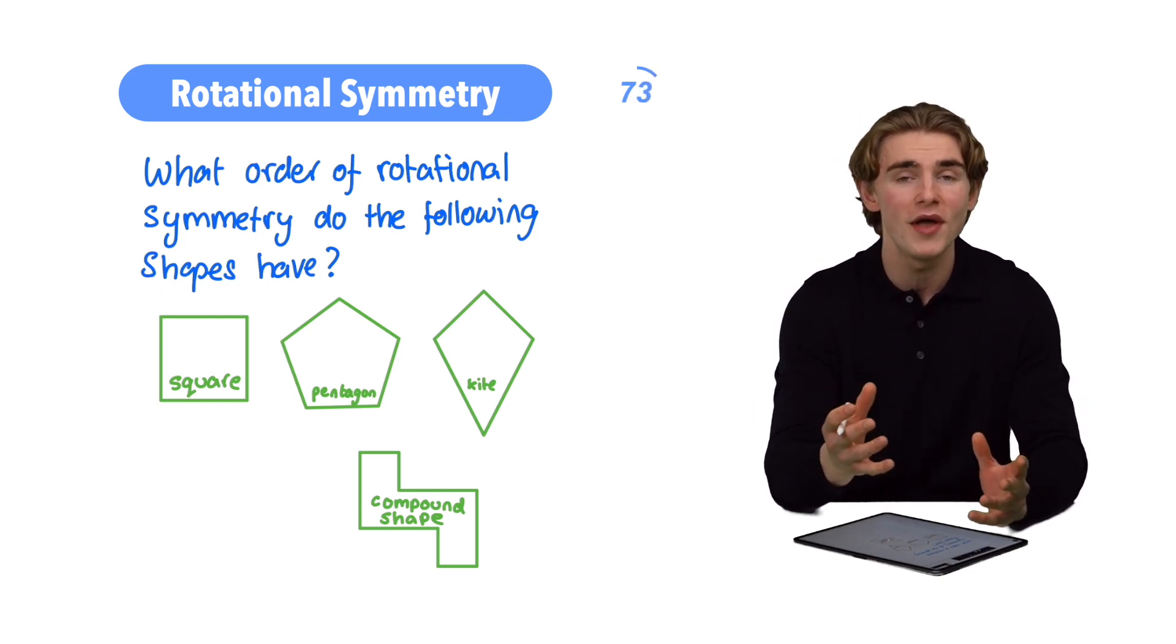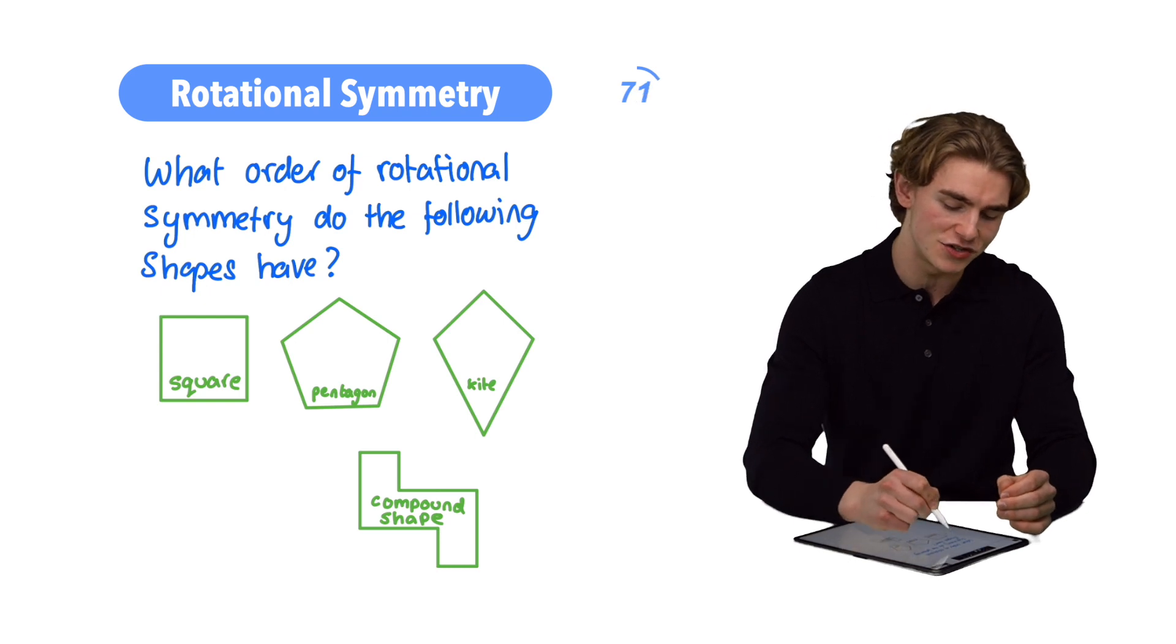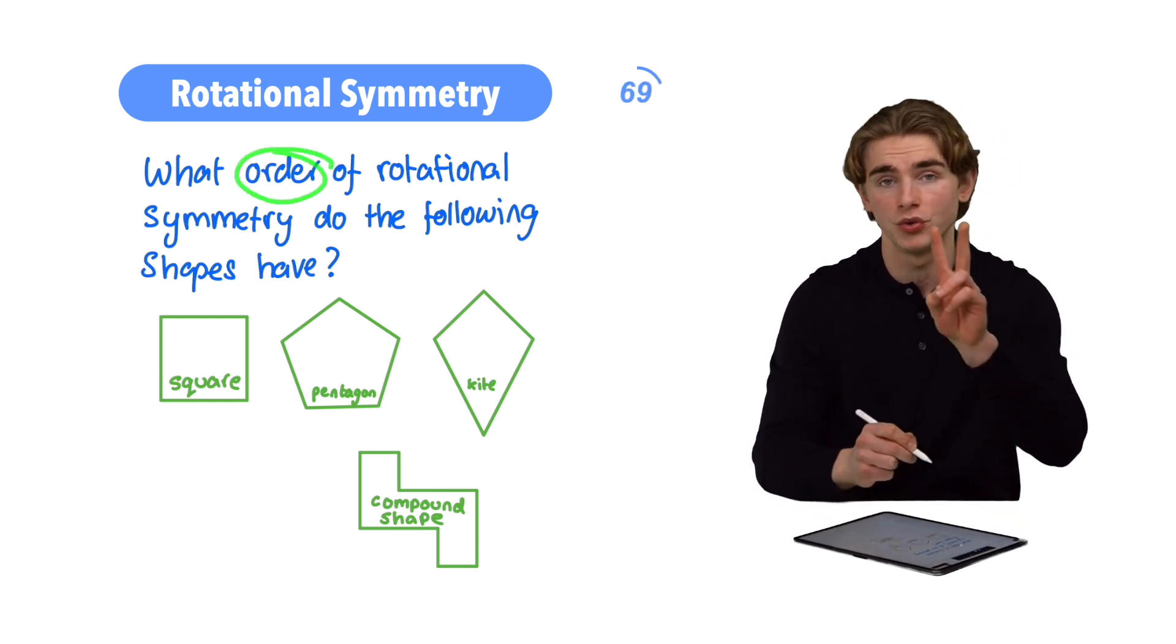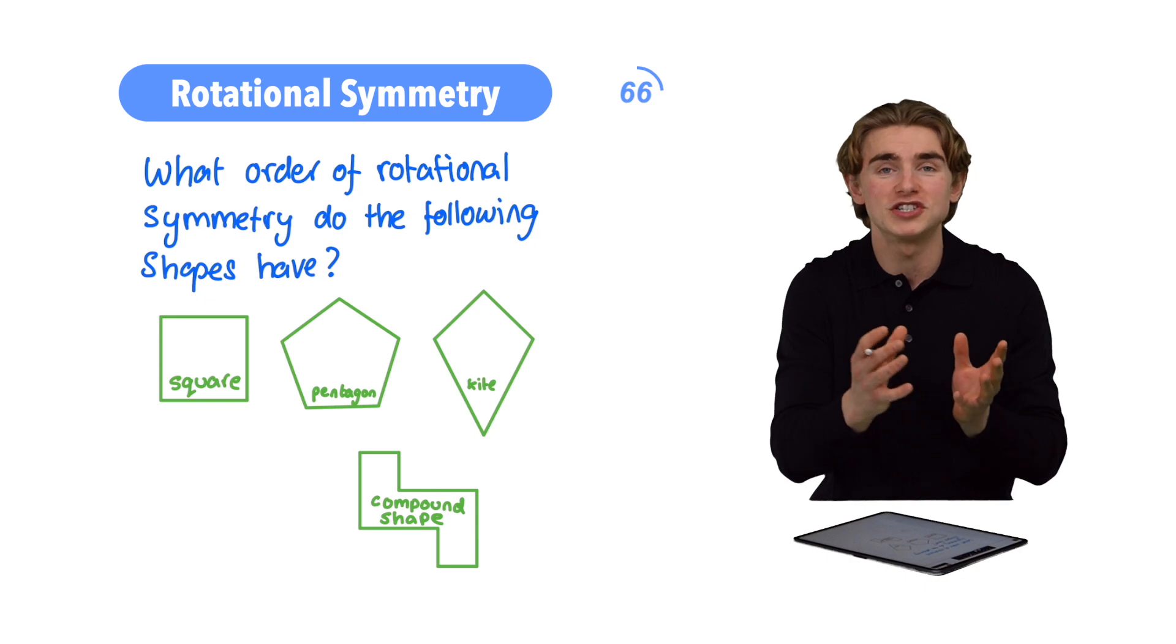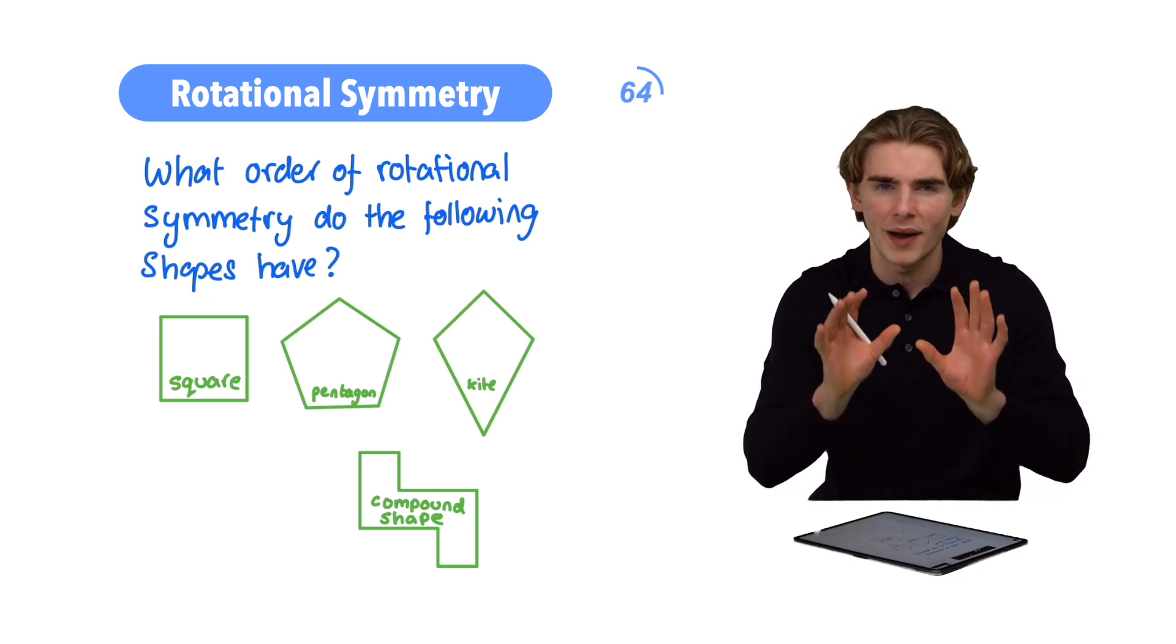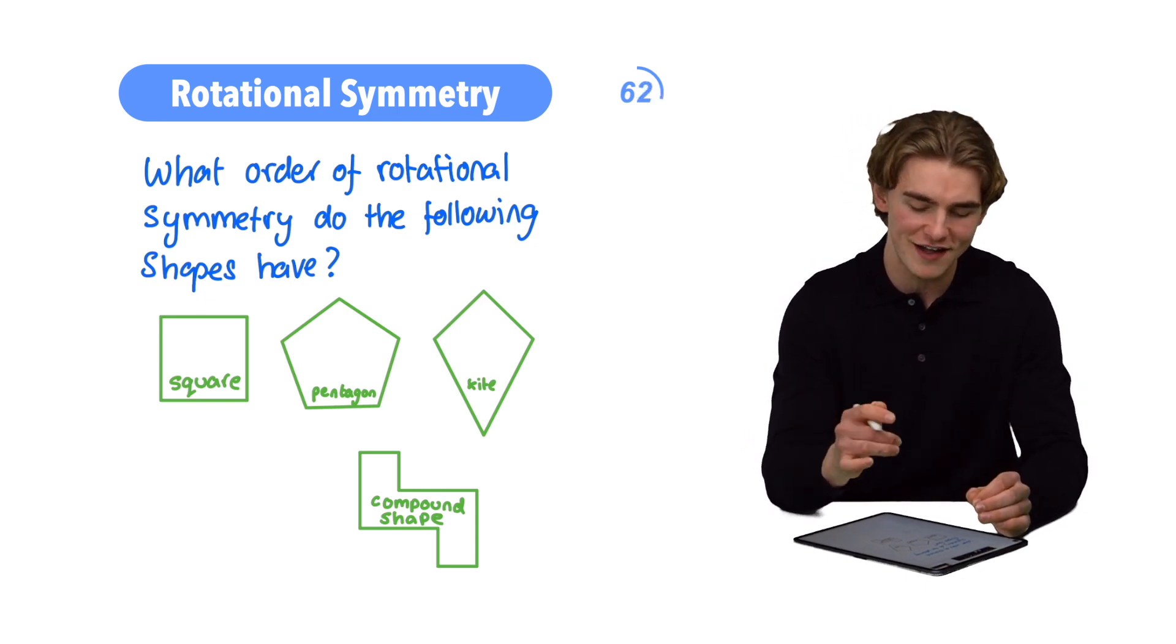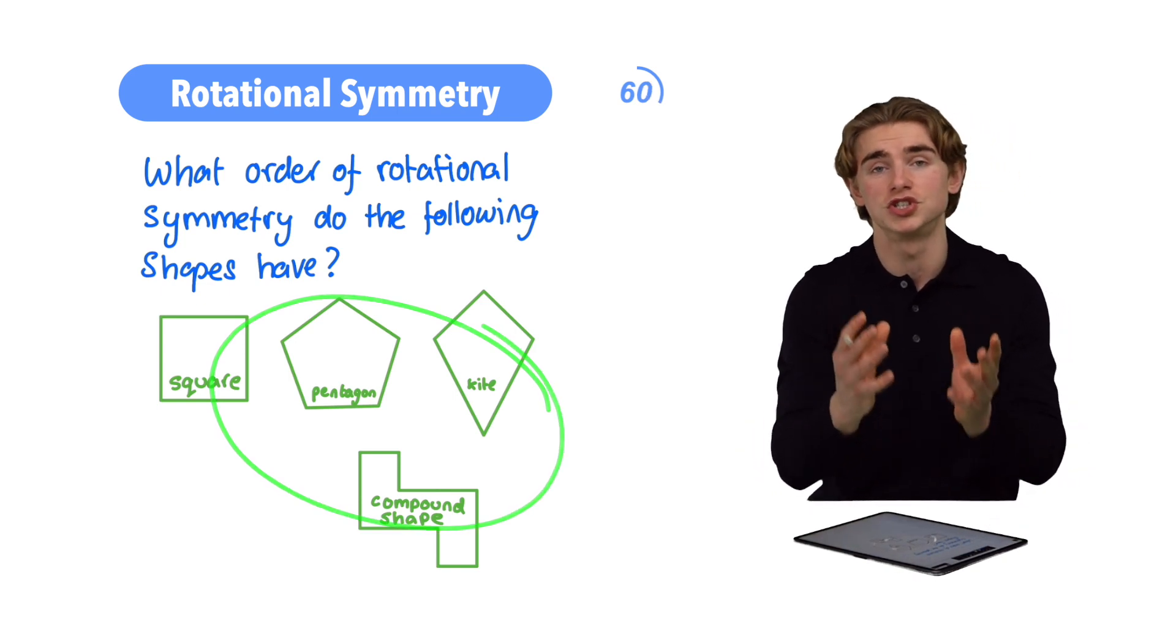So if a shape, for example, has rotational symmetry of order two, there are going to be two different rotations of that shape which look exactly the same. Now, that might sound a little bit weird at the moment, so let's have a look at these four shapes to show what I mean.